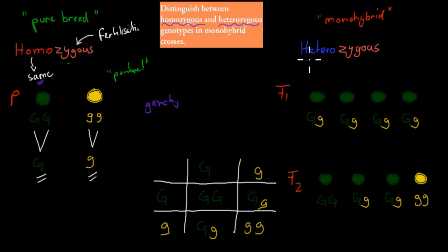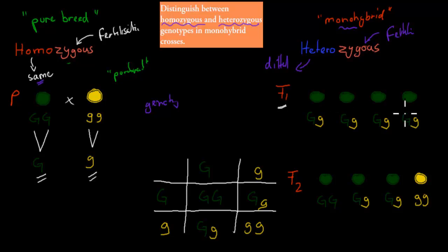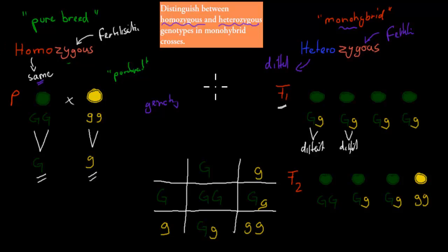Whereas heterozygous — hetero means different, and zygous is the same: fertilization. We used to call them monohybrids because they had different types of one trait, but we can also call them heterozygous because they have different types of alleles after fertilization. So we fertilized the two pure breeds, and the offspring had one capital G and one small g — different types of alleles. All the F1 generation were heterozygous.